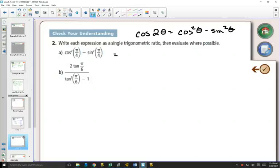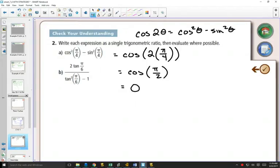So in this case, that means I can rewrite this as cos of 2 times theta. Well, theta here is pi over 4. If I reduce that, I get cos of pi over 2. And from your unit circle, cos is the x-coordinate at 90 degrees. What's your x-coordinate going to be? 0.